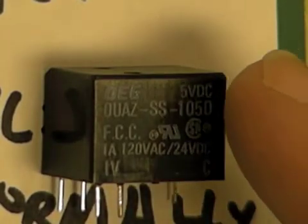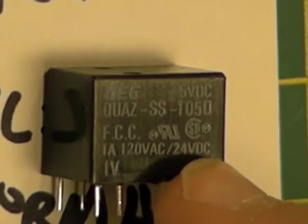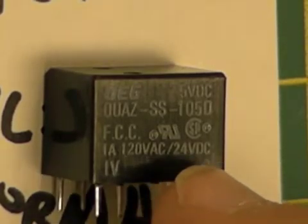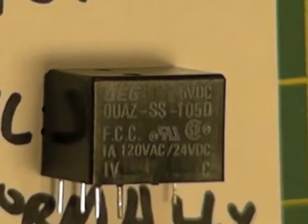5 volts DC - that really means that's the coil voltage. And 120 volts AC, 24 volts DC - that's really how much power can go through this switch, this opening and closing, when you've tripped the relay.